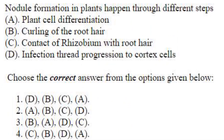Nodule formation in plants follows these steps: first, contact of Rhizobium with the root hair (C); then curling of the root hair (B); then infection thread progression to cortex cells (D); and finally plant cell differentiation (A). The correct sequence is C, B, D, A — answer is option 4.